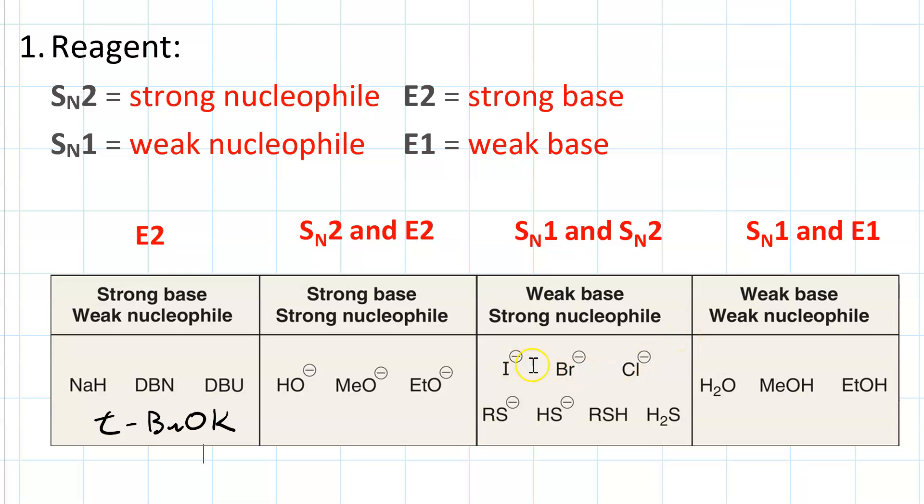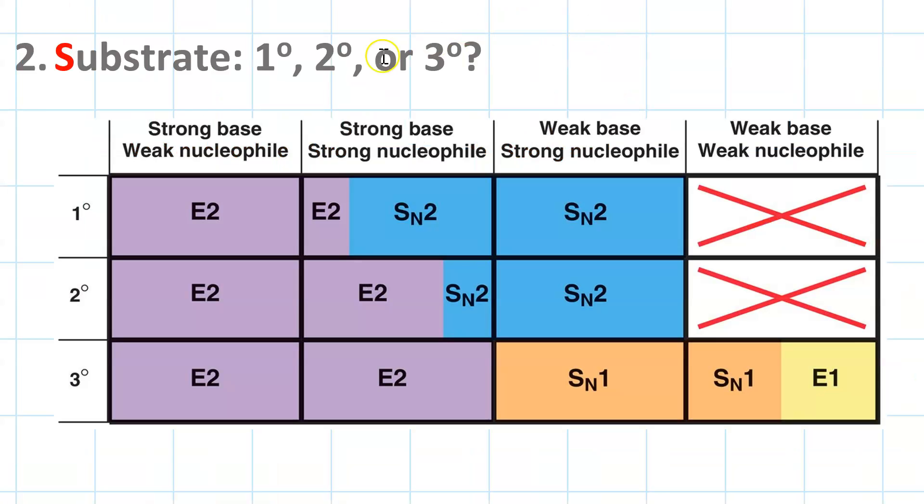This includes iodide, bromide, chloride, anything with sulfur in it. Things that are both weak bases and weak nucleophiles include neutral oxygens, water, and alcohols.